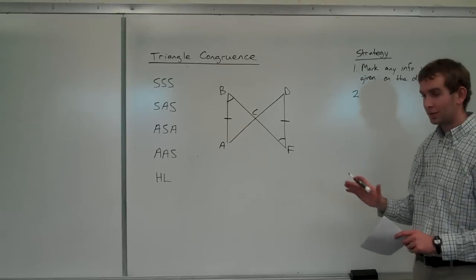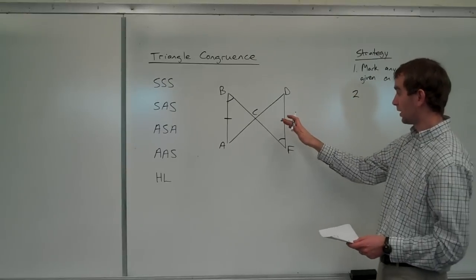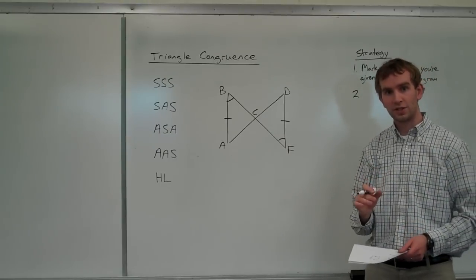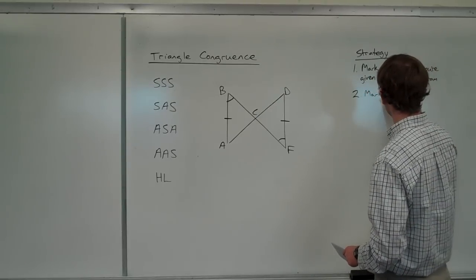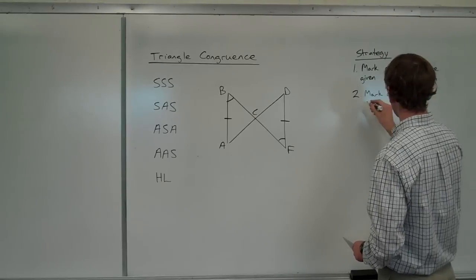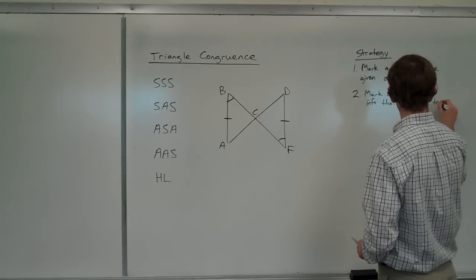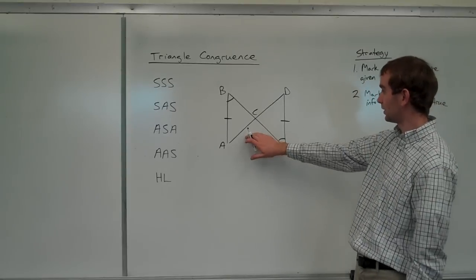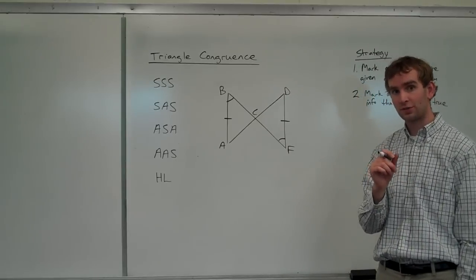Step two: you've got to come up with something else — generally one or two more pieces of information that you know have to be congruent to each other. You have to have a reason for anything else that you mark down. You can't just say AC looks like it's congruent to DC, so I'm going to mark that down. You have to be able to tell me why — you have to have something to back yourself up with.